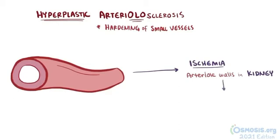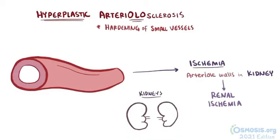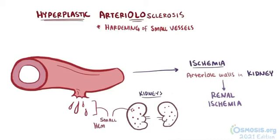The high blood pressure destroys the blood vessels in the kidneys, causing renal ischemia. What's unique in hyperplastic arteriolosclerosis is that the kidneys themselves will look like they have insect bites everywhere. That's because the high blood pressure ruptures the weakened renal blood vessel walls, causing small hemorrhages all over the kidneys. These small blood vessel hemorrhages give the kidney tissue the appearance that they've been bitten by insects.